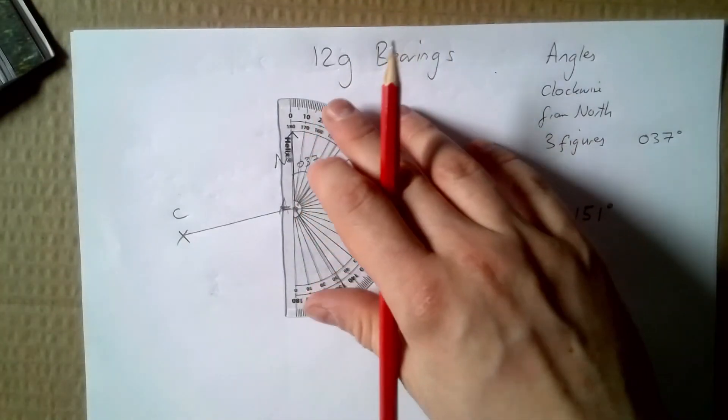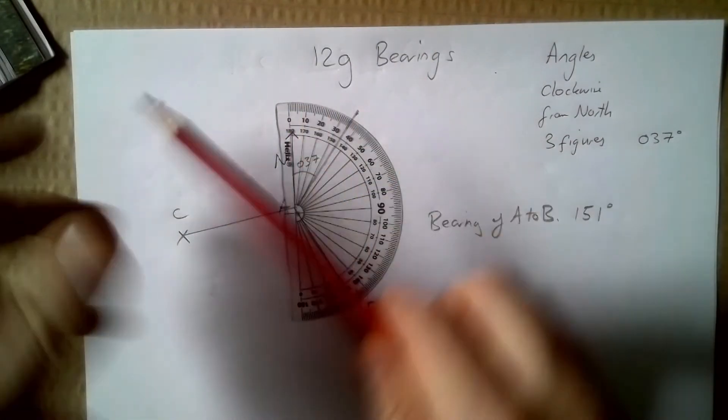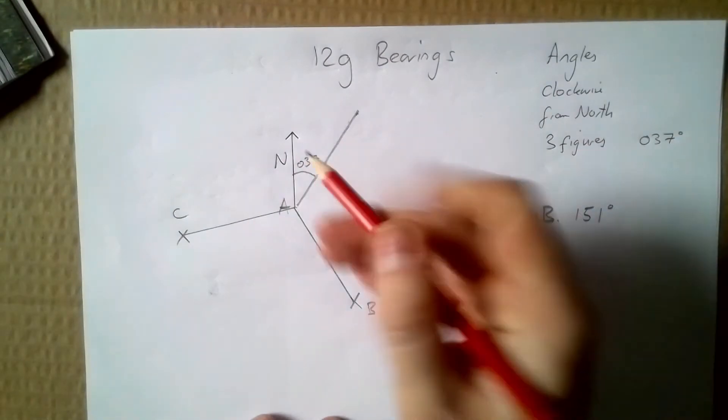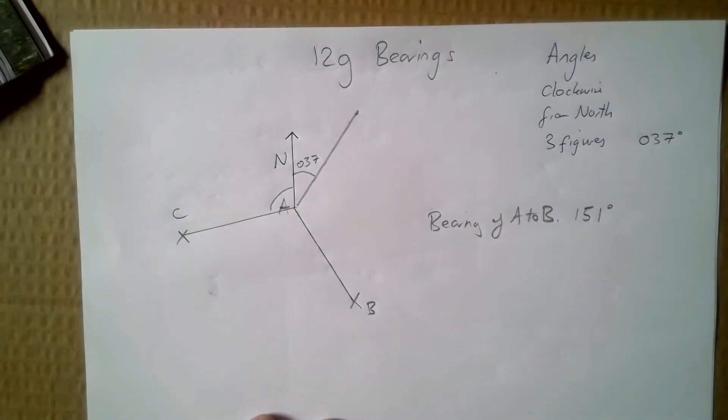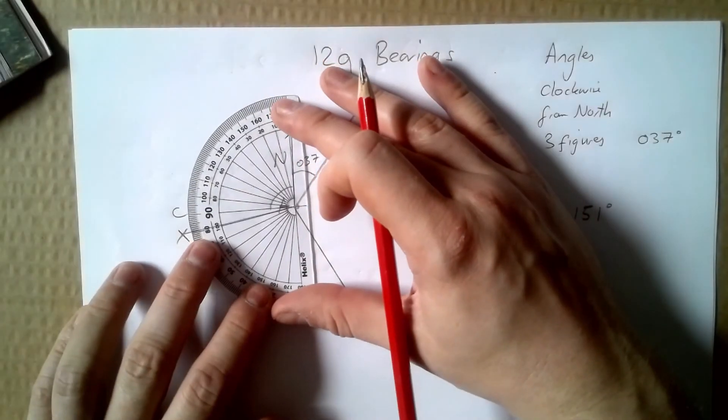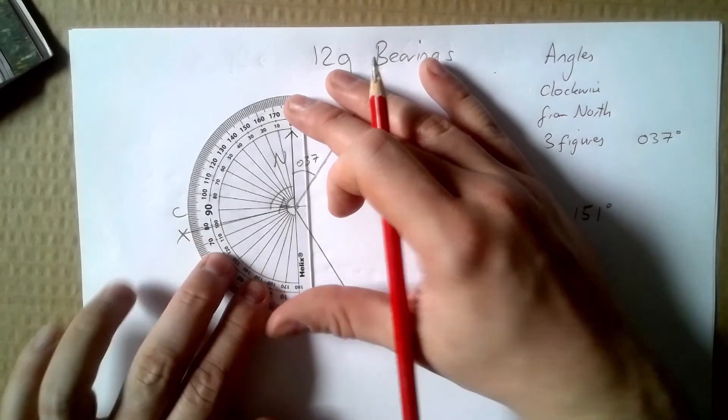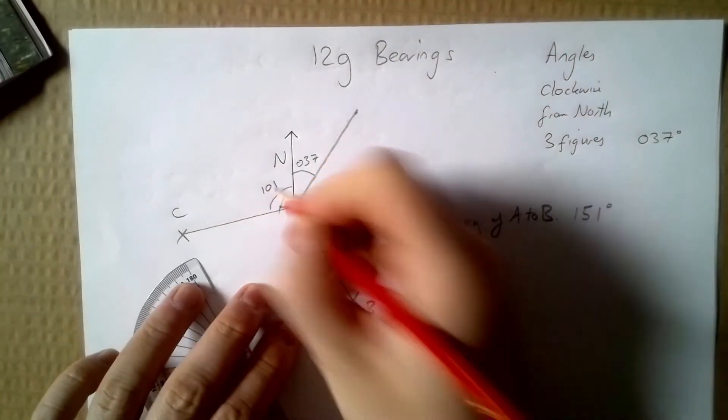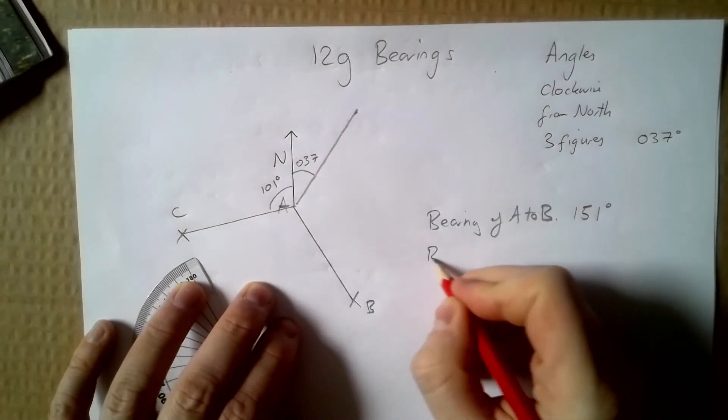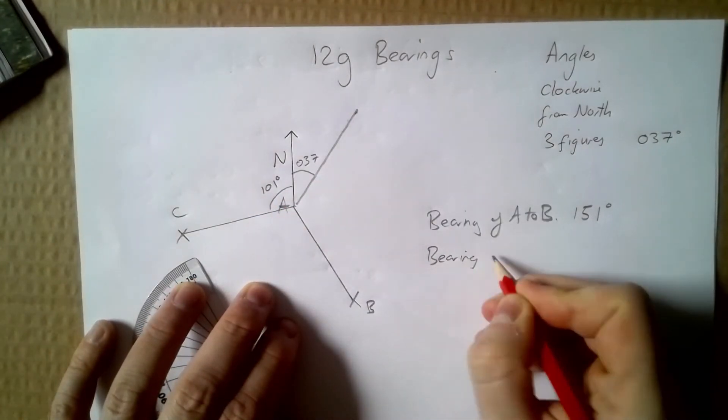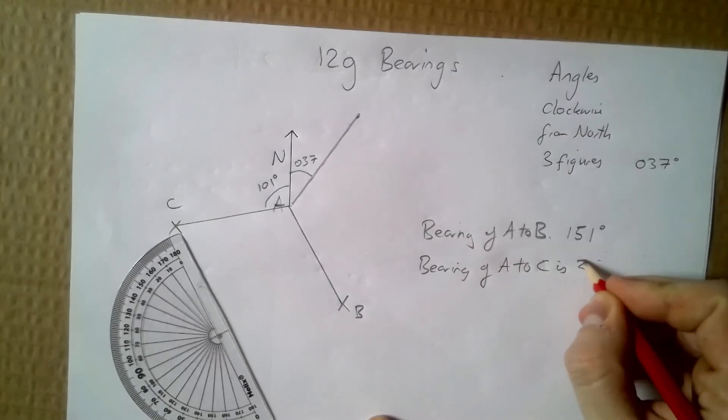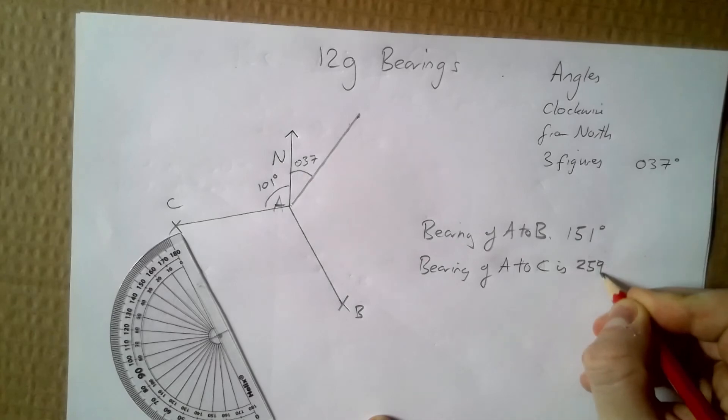So I can either use 180 and curve rounds and try and measure it this way, but really I'm going to measure this side and then take it from 360, which is the whole circle. So if I measure this, I've got an angle of 101. So my bearing of A to C is 259 degrees.